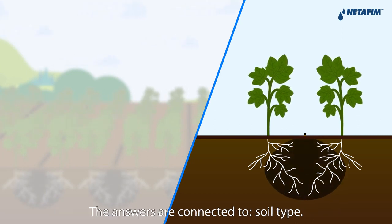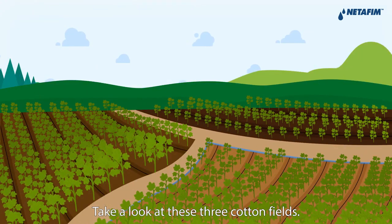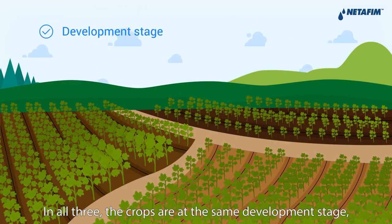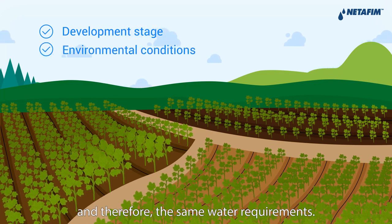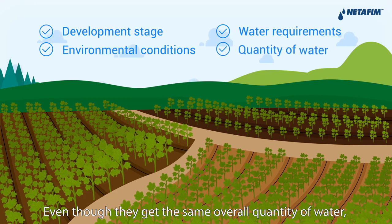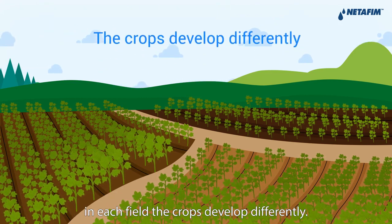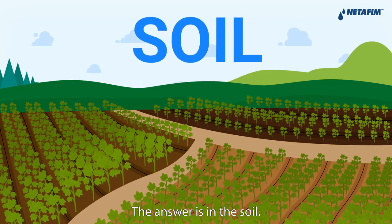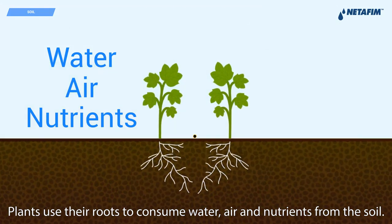The answers are connected to soil type. Take a look at these three cotton fields. In all three, the crops are at the same development stage, have the same environmental conditions and therefore the same water requirements. Even though they get the same overall quantity of water, in each field the crops develop differently. Why? The answer is in the soil. Plants use their roots to consume water, air and nutrients from the soil.